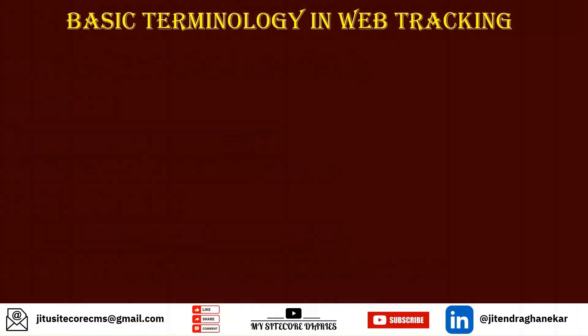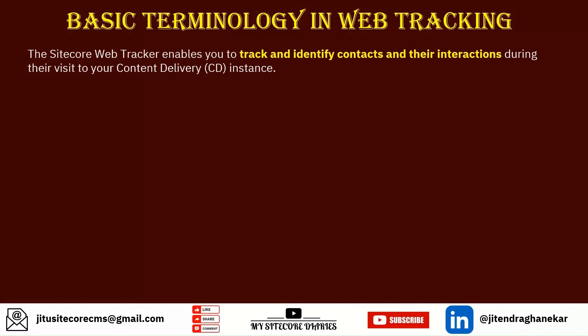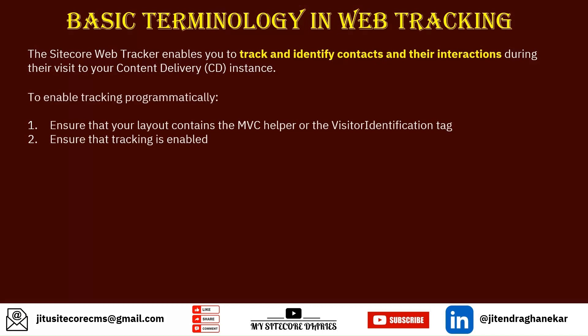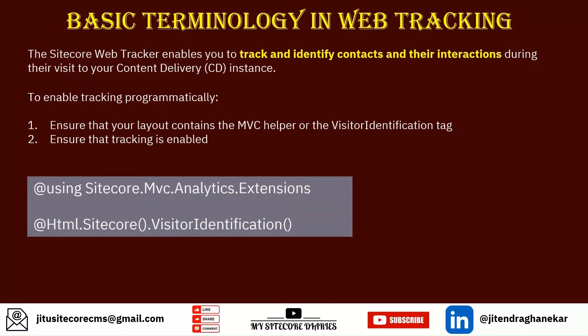Now let's see basic terminologies used in web tracking. The Sitecore web tracker enables you to track and identify contacts and their interactions during their visit to your content delivery instance. To enable tracking programmatically, you need to do two things: first, ensure that your layout contains the MVC helper or the visitor identification tag; second, ensure that tracking is enabled. The visitor identification tag is added in every layout to enable tracking on the CD and CM server.